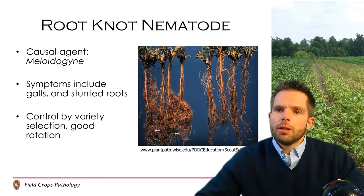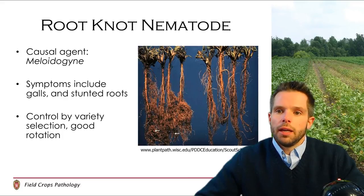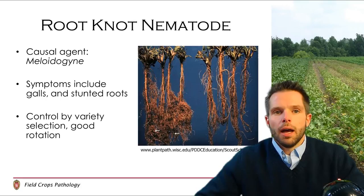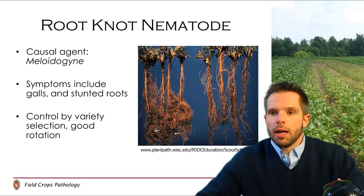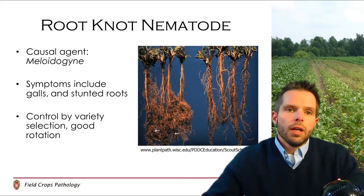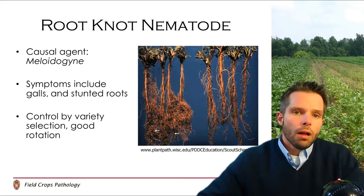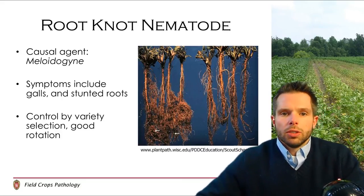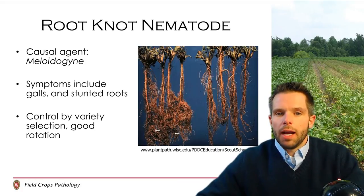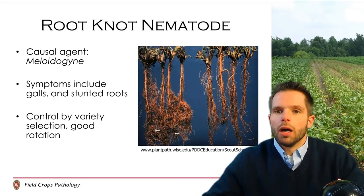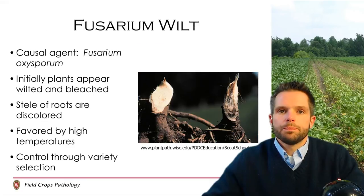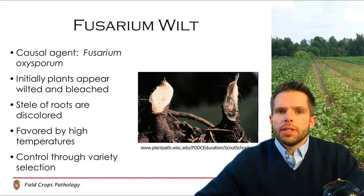Another root disease we see on alfalfa in the state is actually a nematode problem caused by Meloidogyne nematodes — this is root knot nematode on alfalfa. Symptoms include galls and also stunting, and control is going to be by variety selection and also through good rotations.